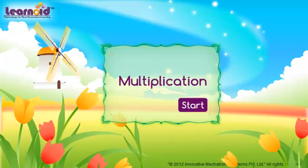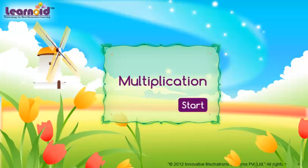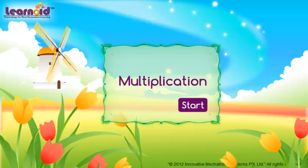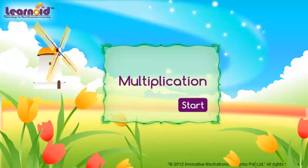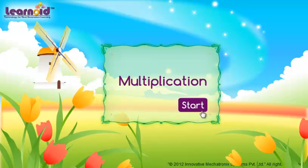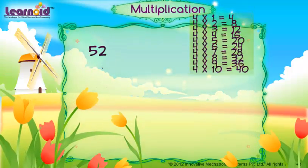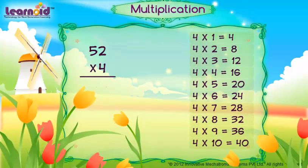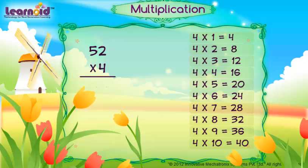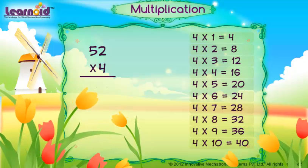Today we will learn how to multiply 2 digit with 1 digit. We have to multiply 52 with 4.